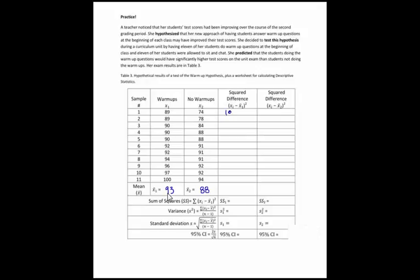That means we're going to take 89 minus 93, which is negative 4, and we're going to square it and whenever we square something we end up with a positive number. So none of your numbers in this column should be negative, even if they might be negative before you square them. And so 4 squared gives us 16. I'm going to do that for all of them. I'm also going to do the same thing in this column. I'm going to take the sample and subtract from it the mean, so 74 minus 88 squared is 196.